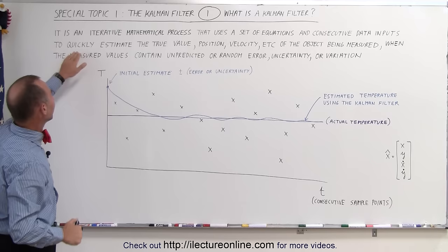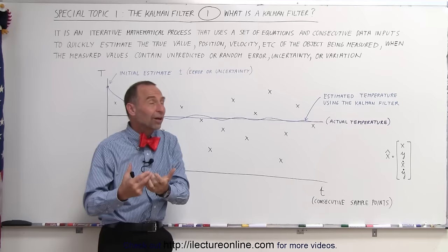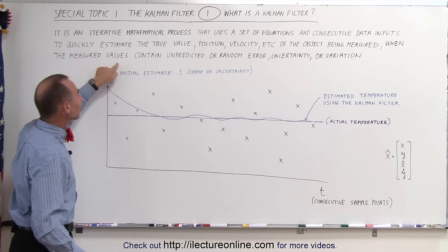So it quickly estimates the true value, position, velocity, whatever it is that we're trying to measure of the object that's being measured when the measured values contain unpredicted or random errors, uncertainties or variations as well.